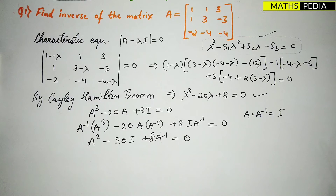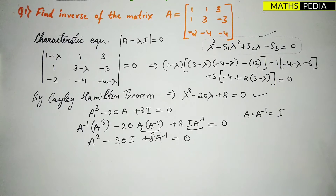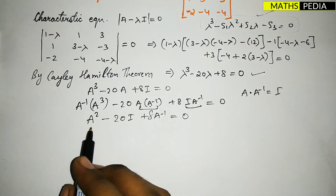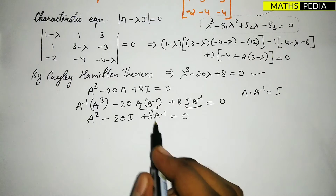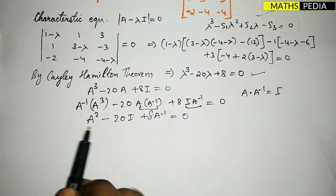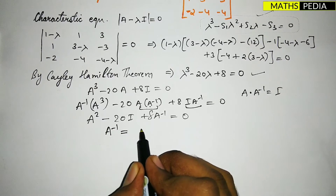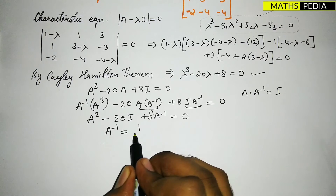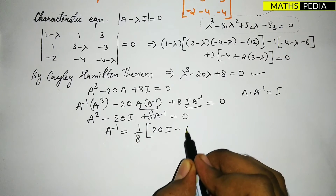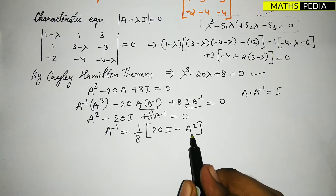Rearranging and keeping A⁻¹ on one side, we get: A⁻¹ = (1/8)(20I - A²). So we need to compute A² first. A² means multiplying matrix A by itself — do not just square the individual elements; you must perform full matrix multiplication of A into A.